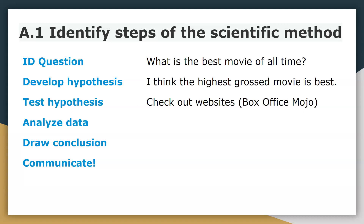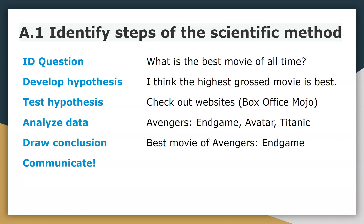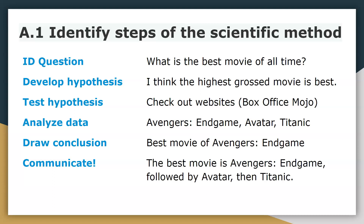When analyzing the data, you can look at domestic sales — sales in the U.S. — or worldwide sales. The information currently posted from worldwide data shows the three highest grossing movies were Avengers: Endgame, Avatar, and Titanic. Based off this information, one person would conclude that the best movie of all time is Avengers: Endgame, because it made the most money. When communicating that to others, you'd say the best movie is Avengers: Endgame, followed by Avatar, then Titanic, because that is the order in which they made the most money.